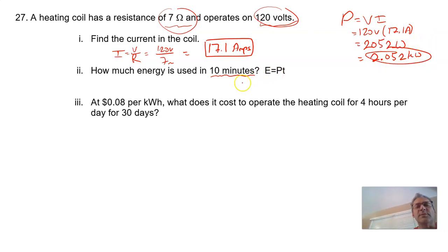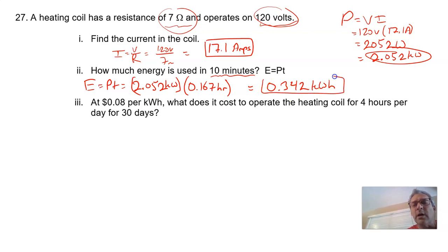And we can write that as 2.052 kilowatts. That's important. When we look at energy, power times time, the power must be written in kilowatts. So 2.052 kilowatts times the time, 10 minutes. Now for 10 minutes, you got to figure out how many hours is 10 minutes. So 10 divided by 60 is 0.167 hours. And that gives us kilowatt hours. Times 2.052, we have 0.342 kilowatt hours of energy.